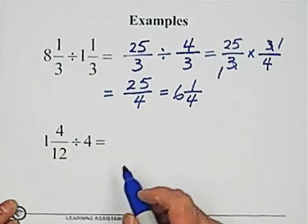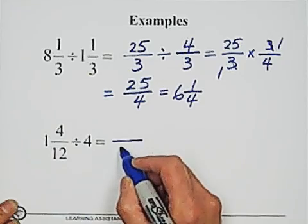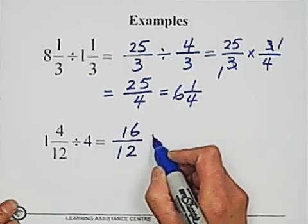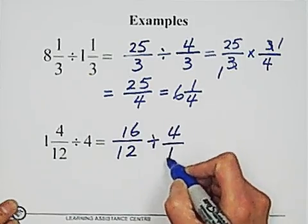The second example, convert the mixed number into improper fraction, 16 over 12 divided 4, we write 4 over 1.